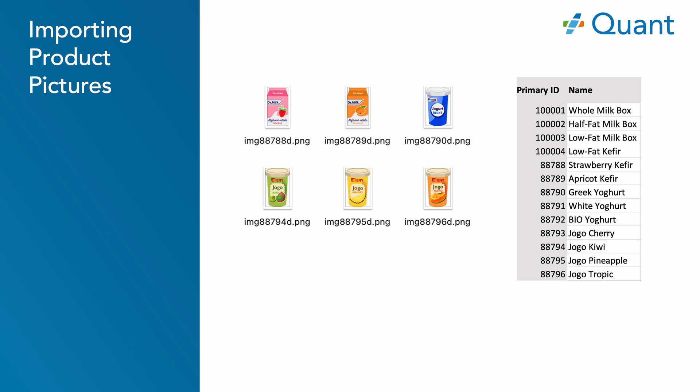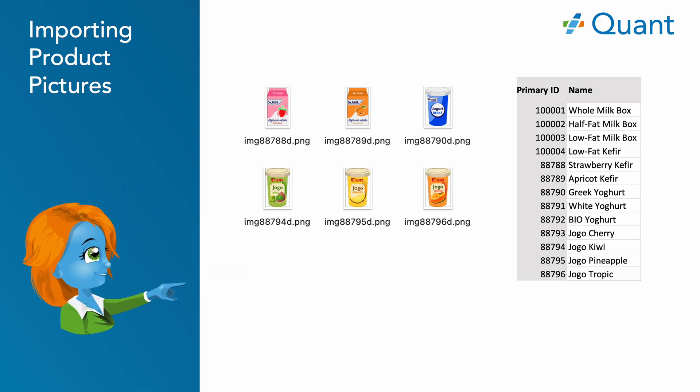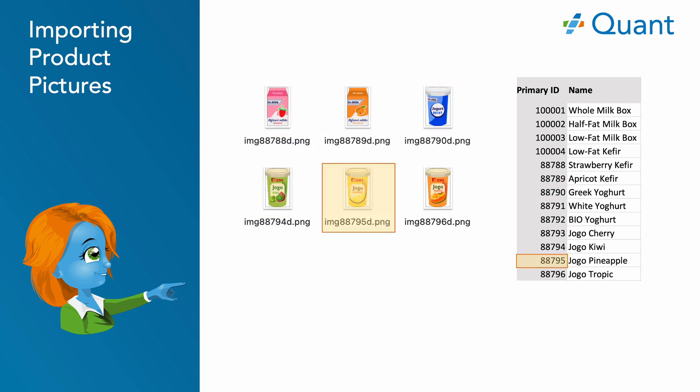Importing product pictures. To import the product pictures, it is important that some product attribute is present in the name of the picture. It can be, for example, the product ID as in our case. It can include a suffix or prefix as Quant can ignore them and match the picture with the correct product.